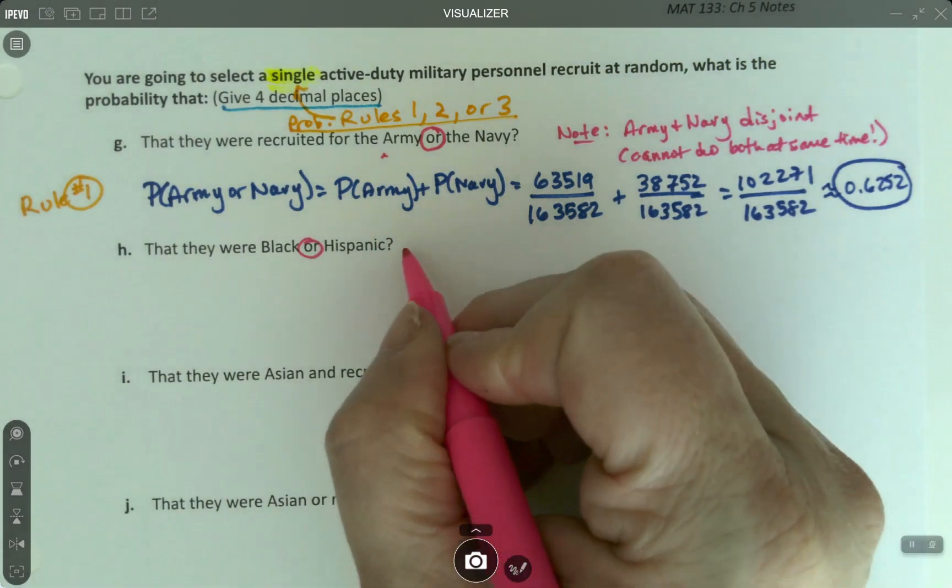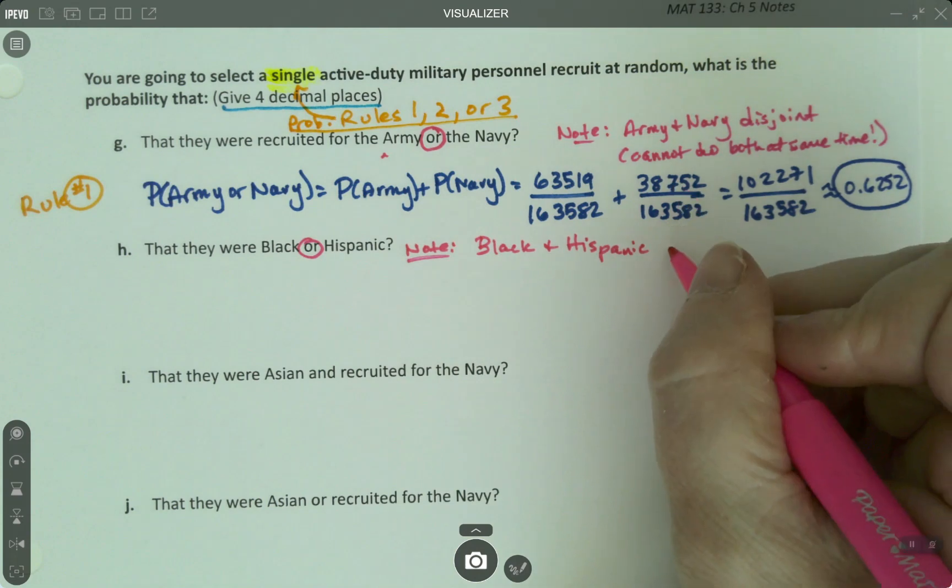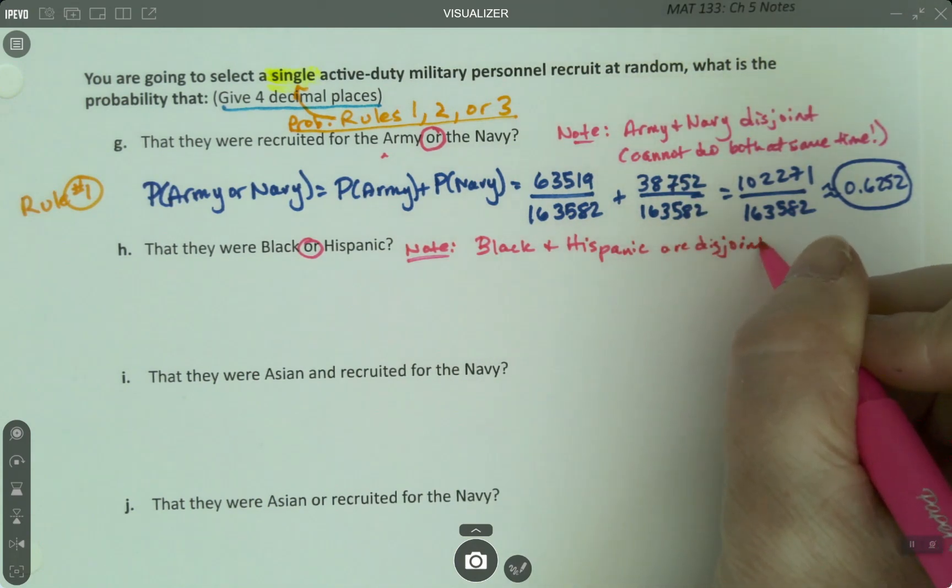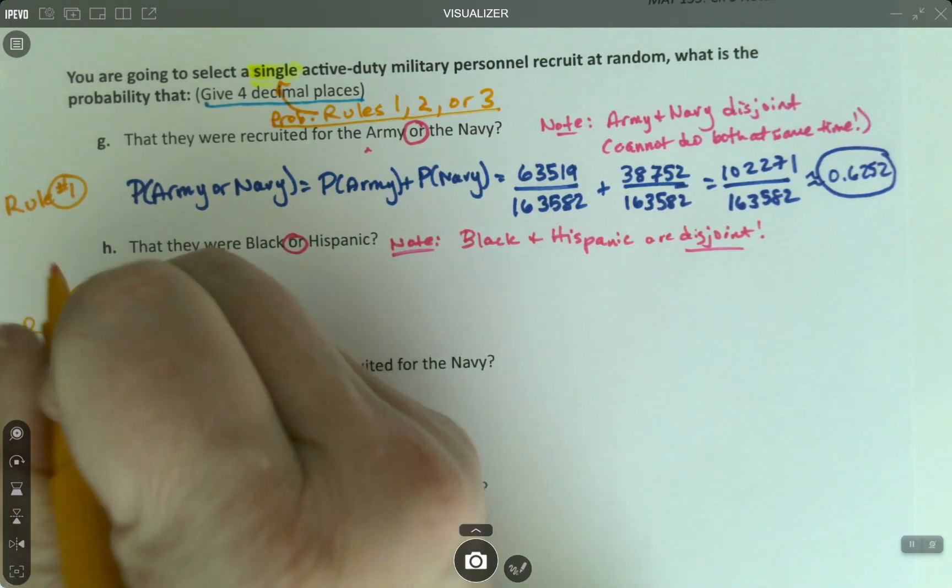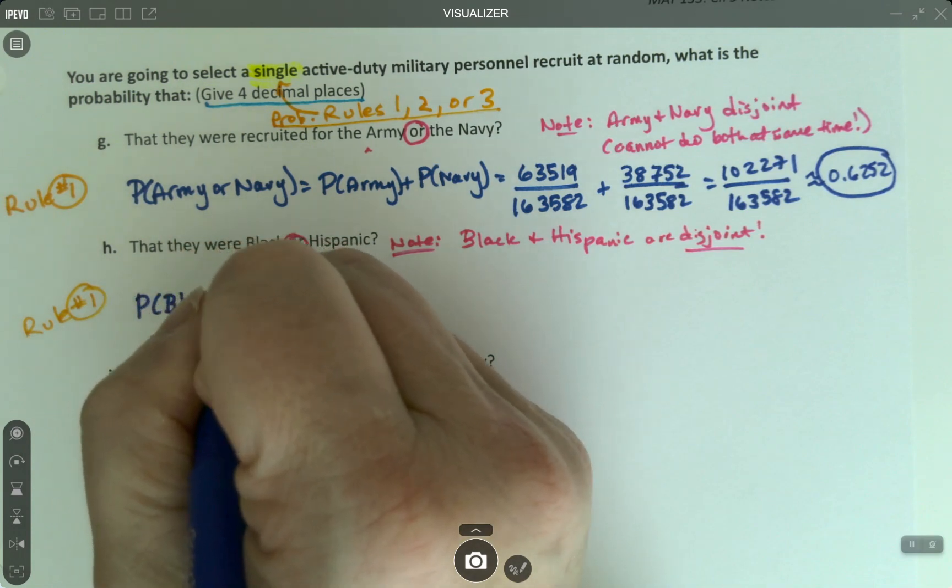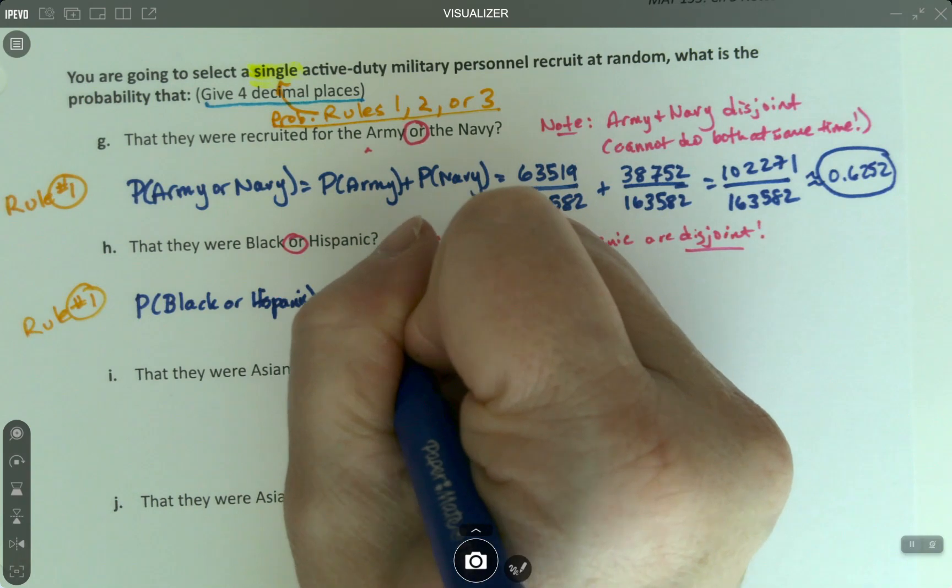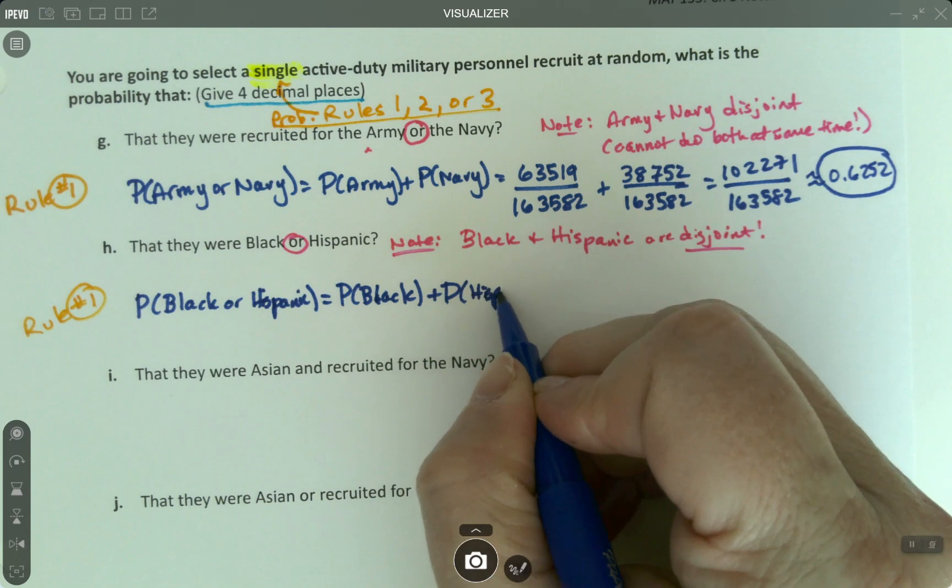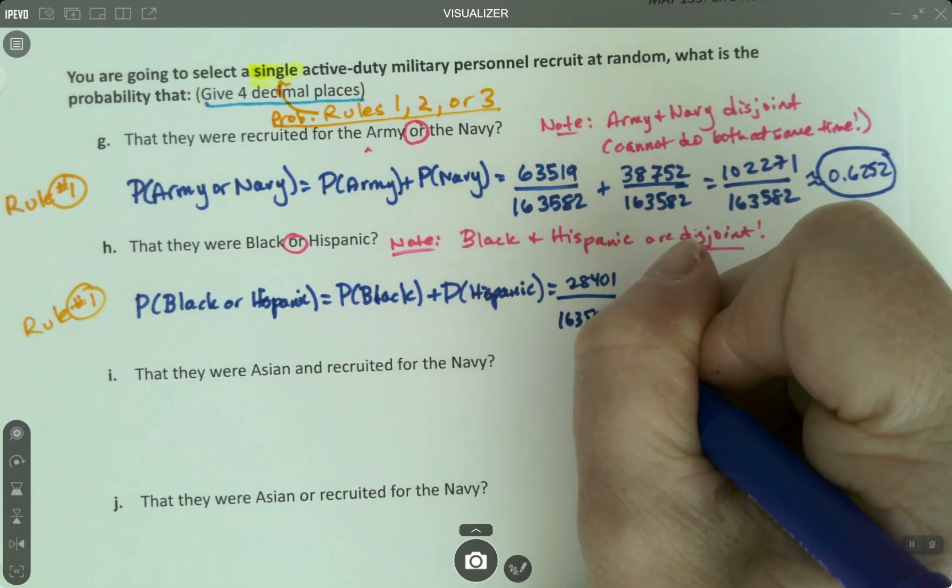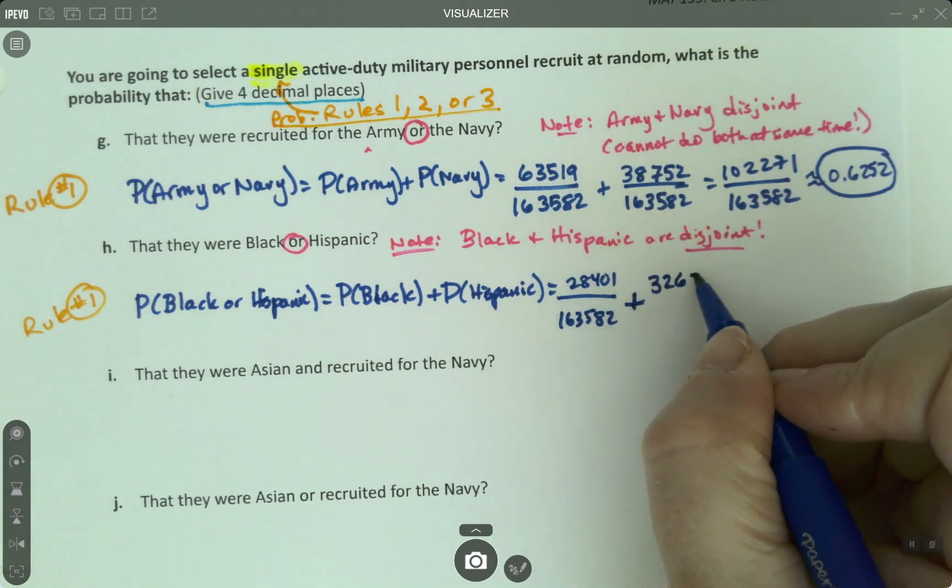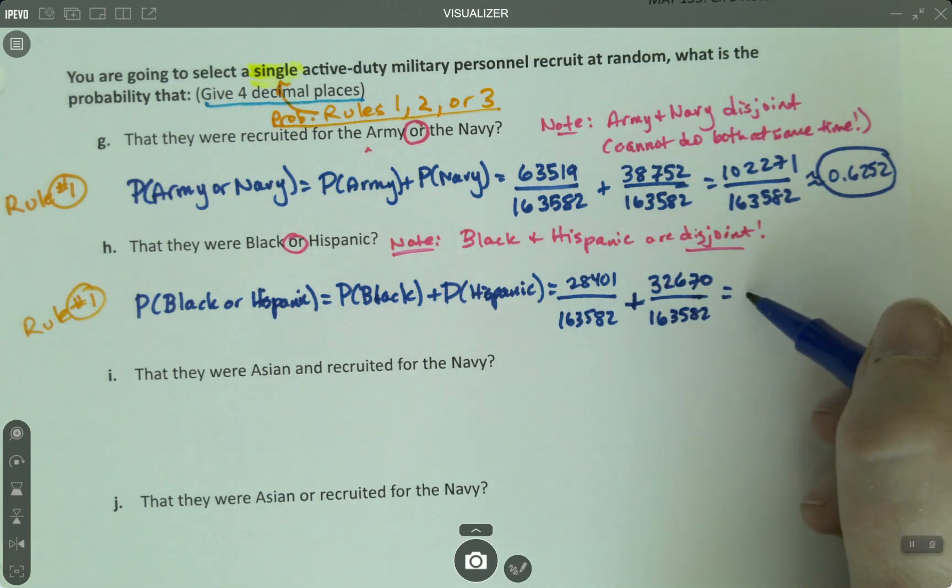So next, black and Hispanic. Well, the way we have this table is that black and Hispanic are disjoint also. So that's good because if they're disjoint it means you can just add them up. So you're using rule number one again. The probability of black or Hispanic is the probability of black plus the probability of Hispanic which is... So black was 28,401 plus and then it'd be 32,670 over 163,582. And again, it didn't ask for the fraction. It's just in case you're interested.